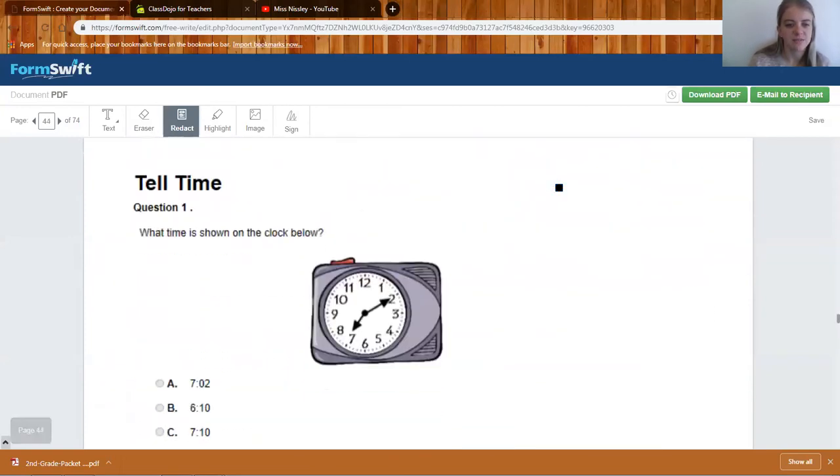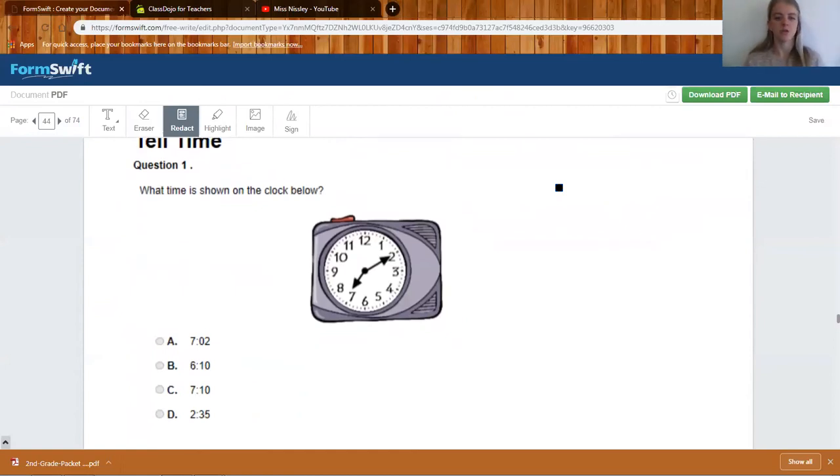Half past means 30 minutes after an hour. Quarter past means 15 minutes after the hour. So what time is shown on this clock? If you look at the little hand right here you know it's between the seven and the eight. So you go with the first number seven. That's the hour. So now we know it could either be A or C. If it points to the two is it 2 or 10? Remember what we just went over. If you point to each number you count by fives to tell you the minutes. So 5, 10. It is 7, 10.